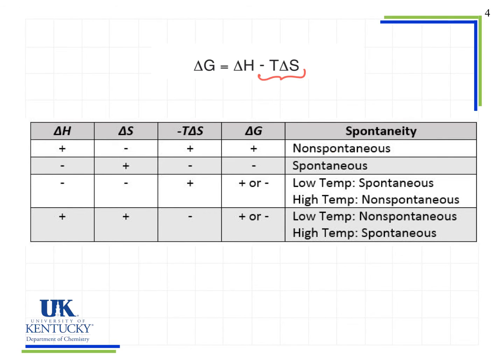If I look at delta H as negative, and delta S is positive, making my minus T delta S term negative, I have two negative terms that together give me a negative delta G value, indicating that my reaction is spontaneous. Now, in those cases, it's either always non-spontaneous or always spontaneous.